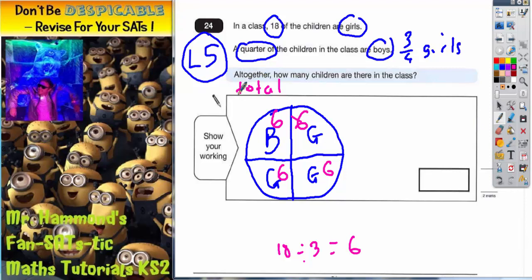So now we're in a position to work out how many children we've got altogether in this class. We've got four quarters, every quarter is worth six, so altogether we've got four lots of six. And four lots of six is 24 children.